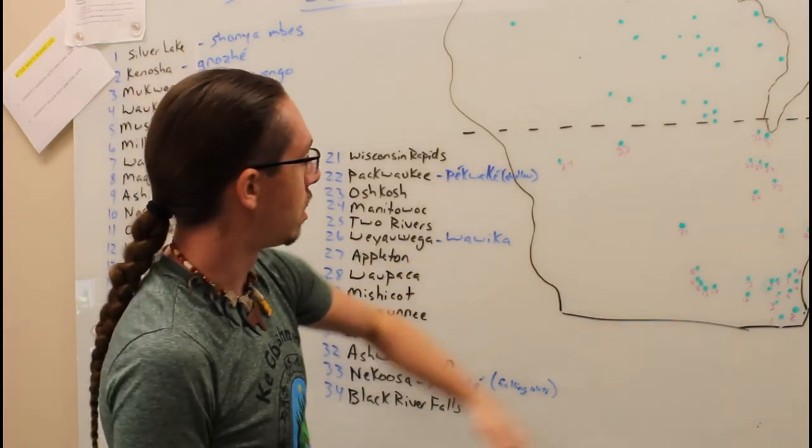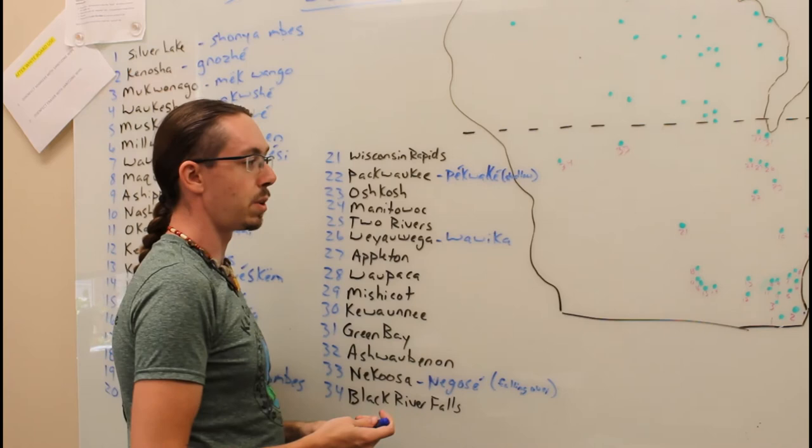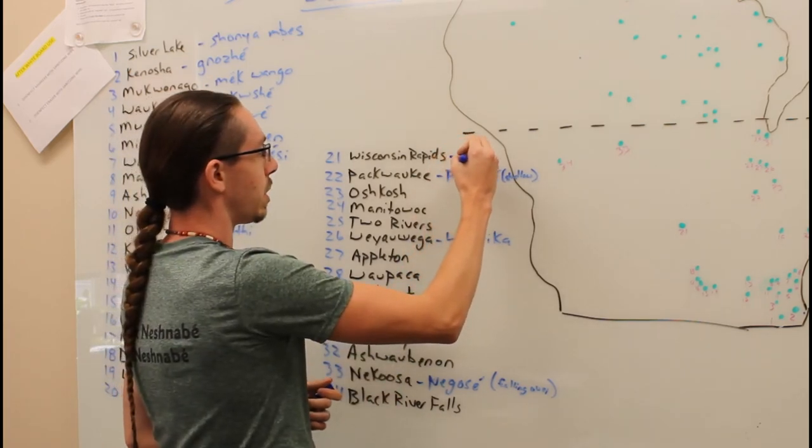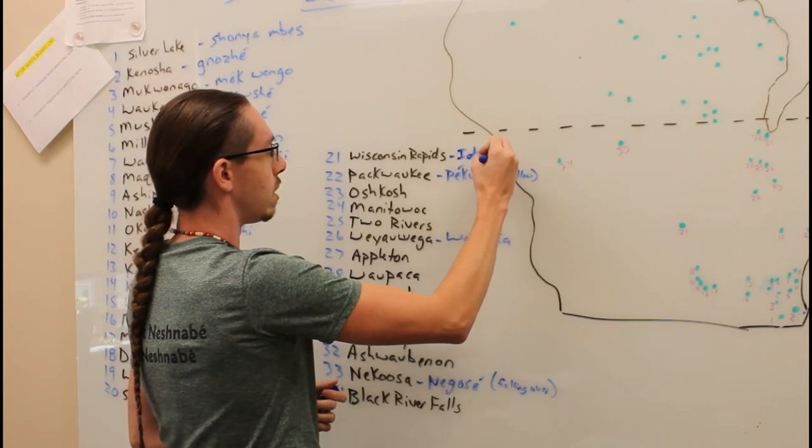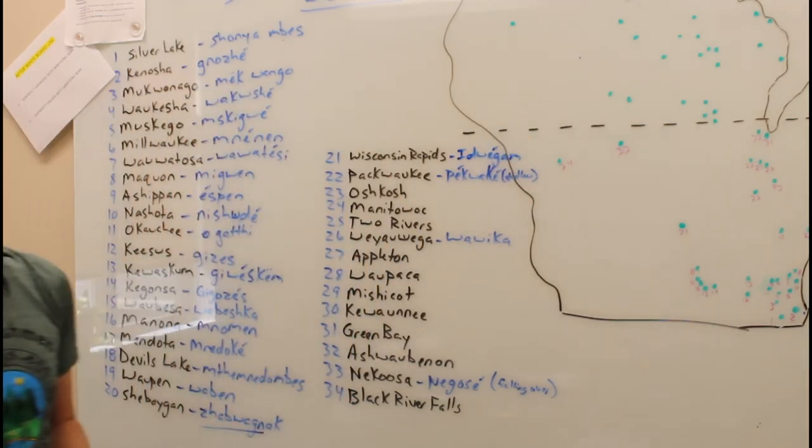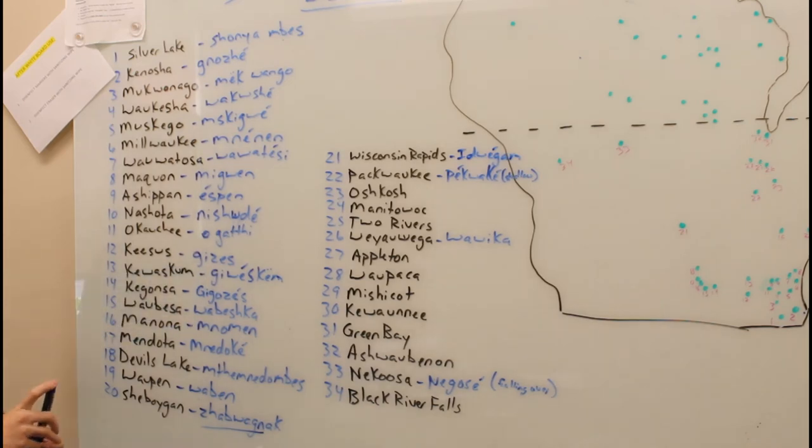Number 21, over here in the middle of the state, we have Wisconsin Rapids, which we call Edwaggaw. Edwaggaw refers to rapids.